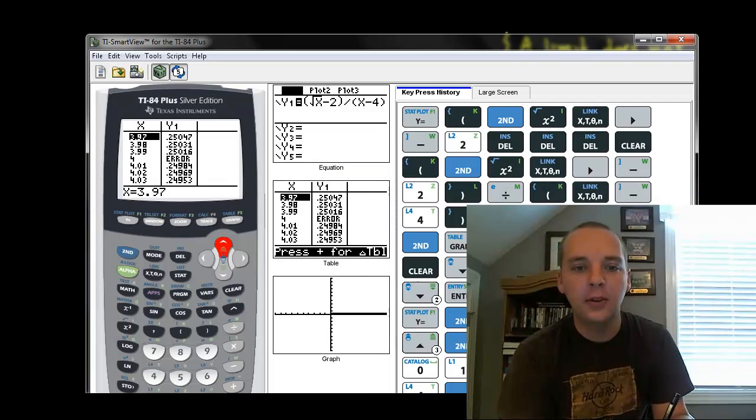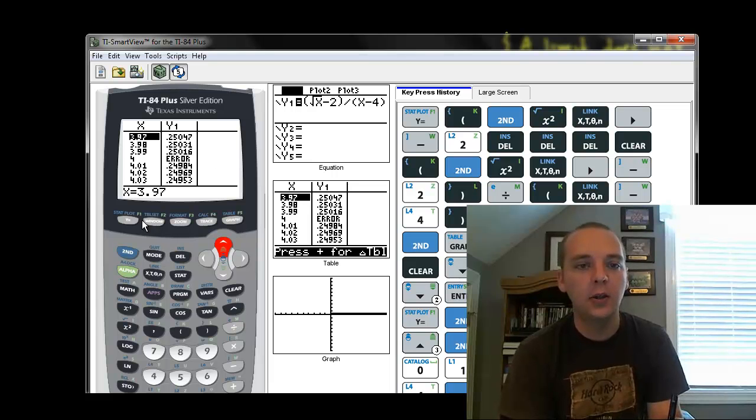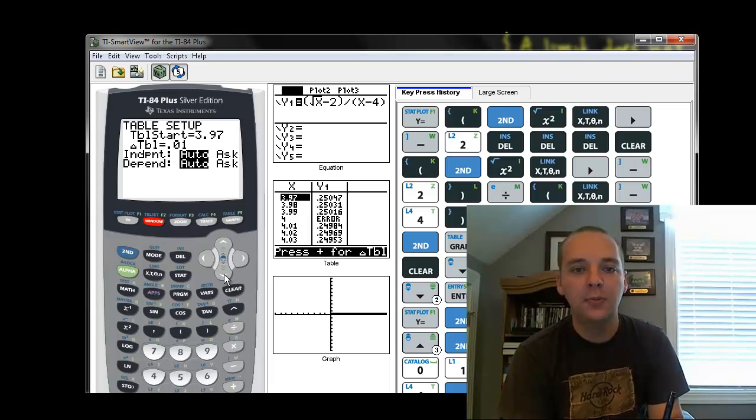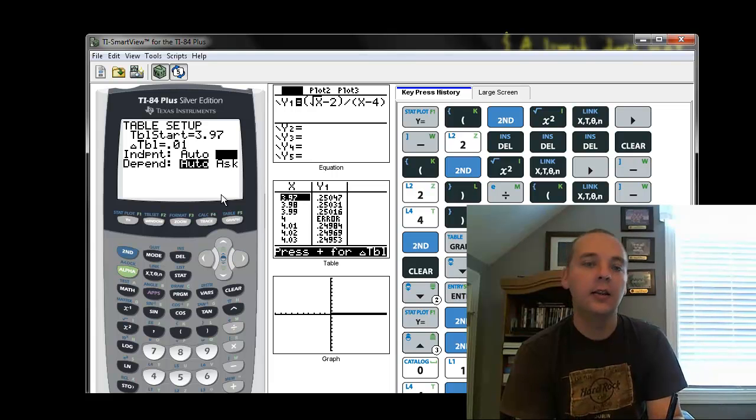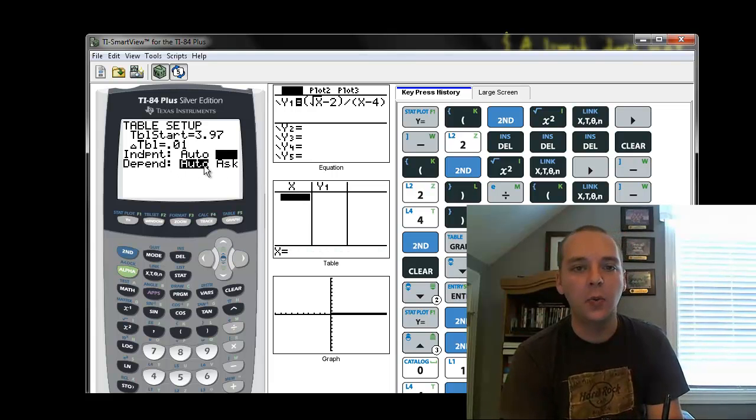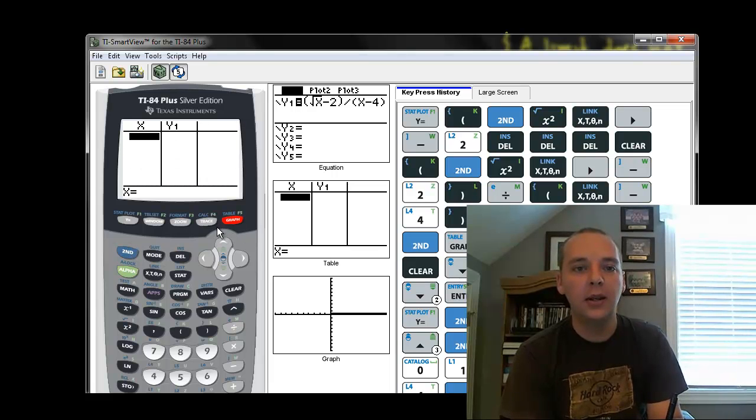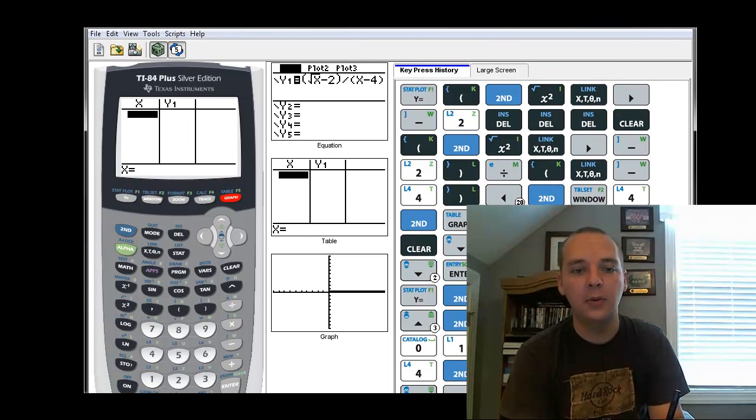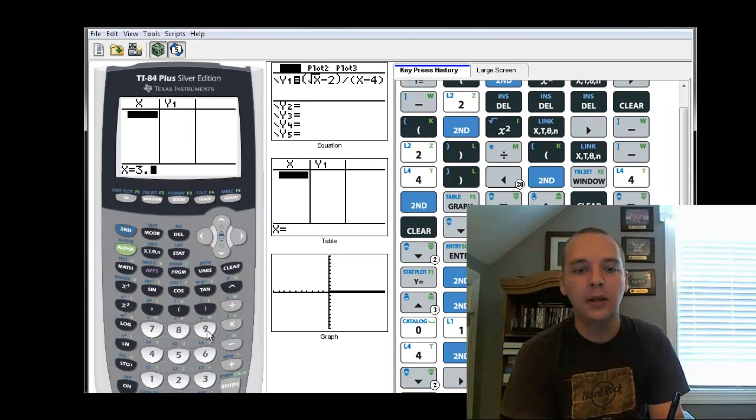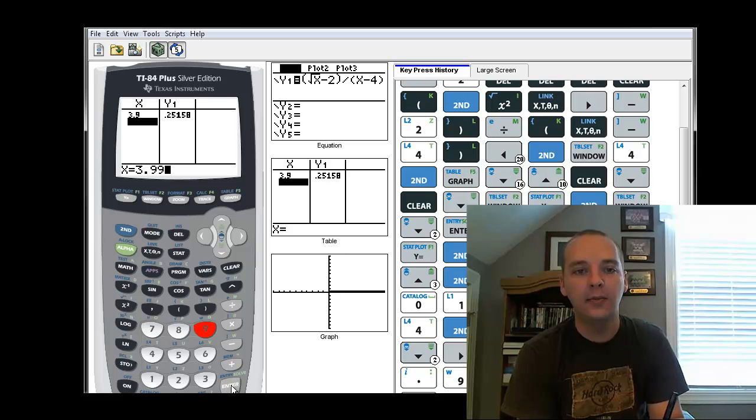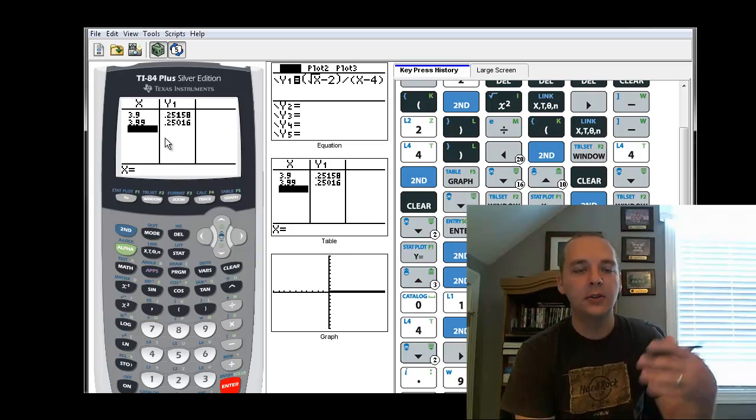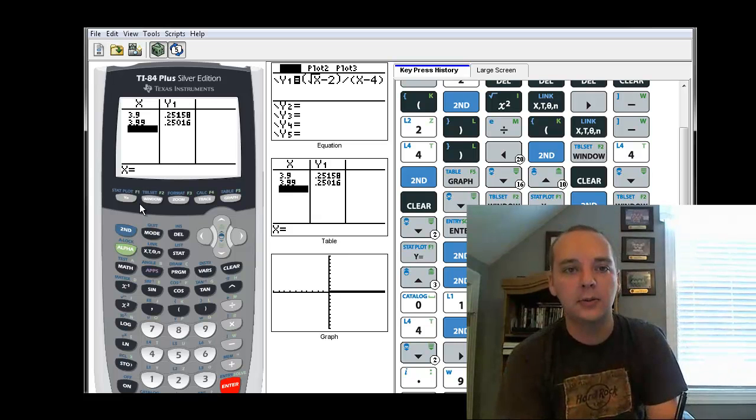Now I'll tell you one other thing. If you have random x values that you want to try, you don't want it to automatically generate them for you, you can set your table to make it ask you for the x values. I would always let it automatically generate the y values, but make it ask you for the x values. That way you can go in and manually type in, what's 3.9? Enter. And it'll tell you. What's 3.99? And then let it tell you. You can manually make up your own table if that's what you want to do.